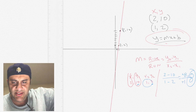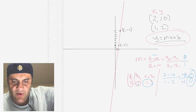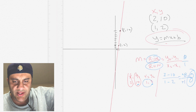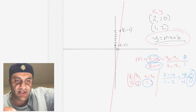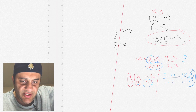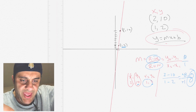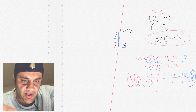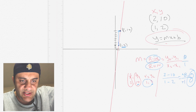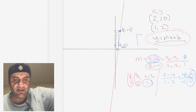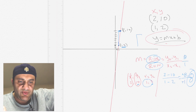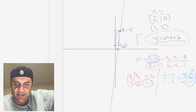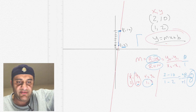So y2 minus y1: y2 is 2 and y1 is 10, so 2 minus 10. Over x2 minus x1: x2 is 1 and x1 is 2, so 1 minus 2. That gives us negative 8 over negative 1. The negatives cancel out and that simplifies to 8. So the slope is 8 — meaning it rises 8 when it runs 1. It goes up vertical 8 and horizontal 1.